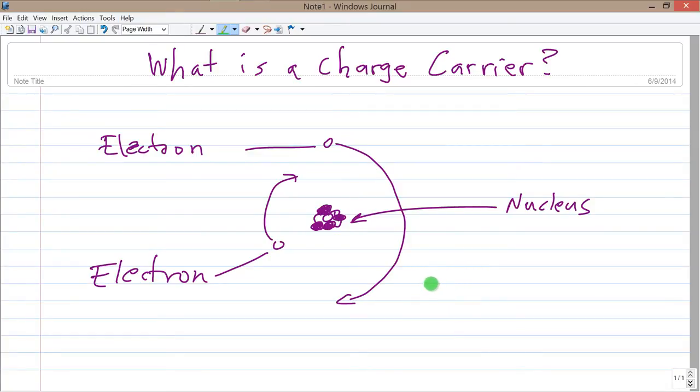But what is it that actually is responsible for that? Well, usually in most everyday situations, electrons are responsible for carrying the electric charge that causes the phenomena that we see. And electrons, as from your chemistry courses you may know, are those things that in the simplistic model of the atom.